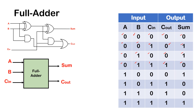Next, A=1, B=0. The partial sum is 1, C-in is 0. So we still have a 1 for the sum. Sum is 1, no carry, so carry-out is 0.